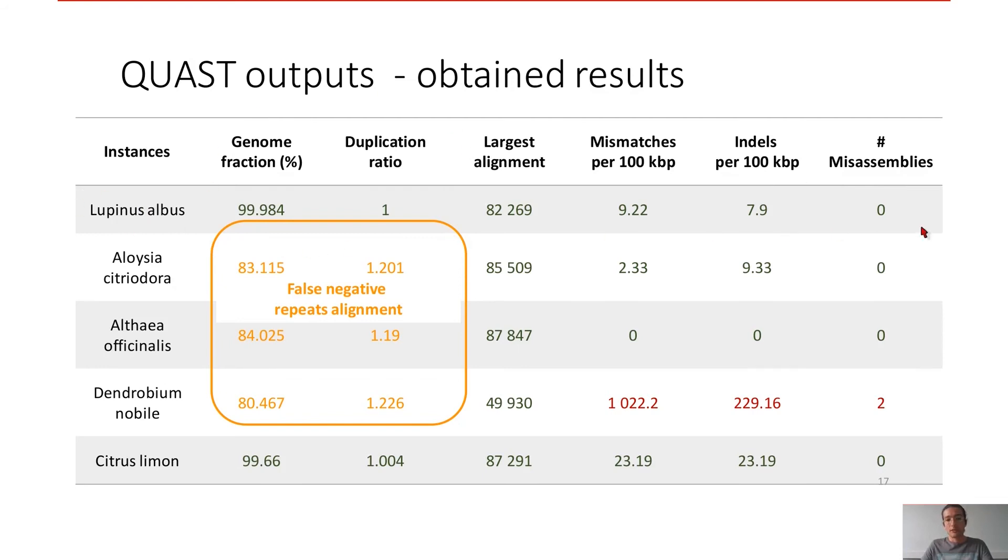Let's see the other results. Lupinus albus case is very good. The other are quite good. Here you can see what I have called a false negative result. You can see that genome fraction here are lower and duplication ratio are higher. In fact, they are linked.